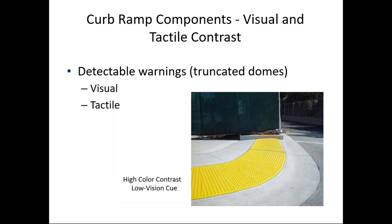Detectable warnings — truncated domes — must be at the base of ramps with high color contrast for low-vision pedestrians. The domes were designed to be detected both with a white cane and underfoot, since people with low vision typically don't use a cane. They provide both a visual and tactile cue. The rule of thumb is: use them anywhere the curb is missing at a street crossing. We'll discuss them more in the next session.